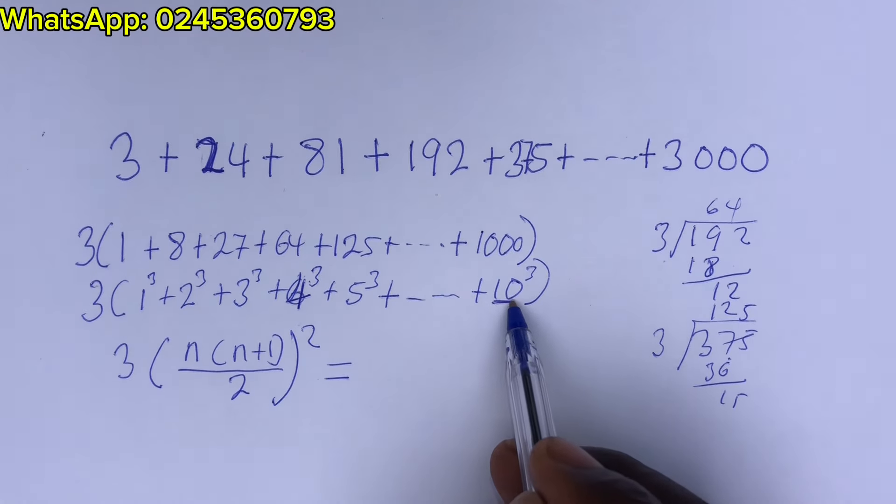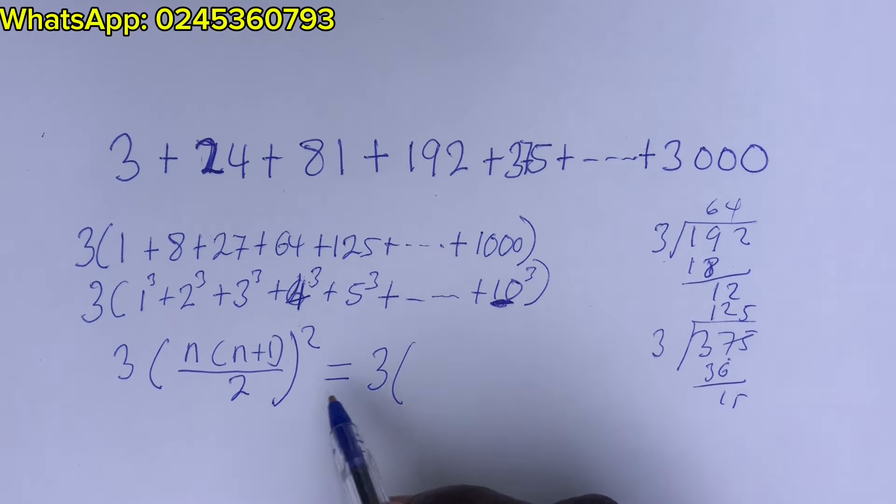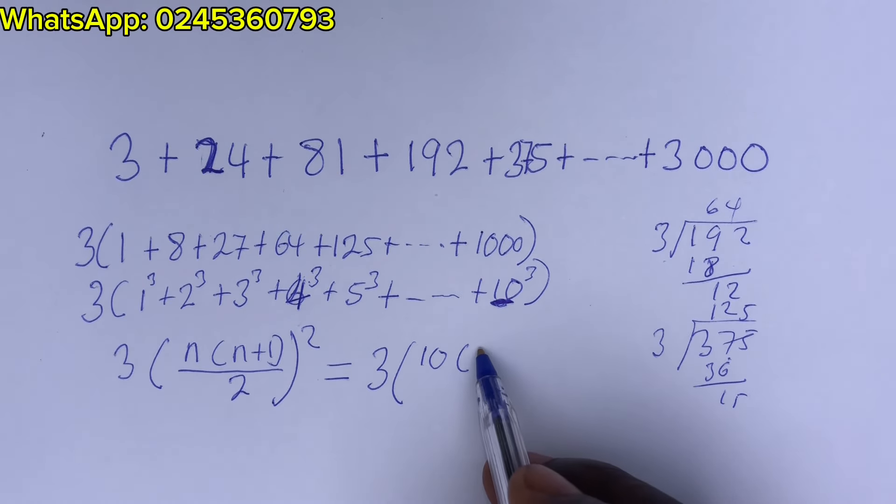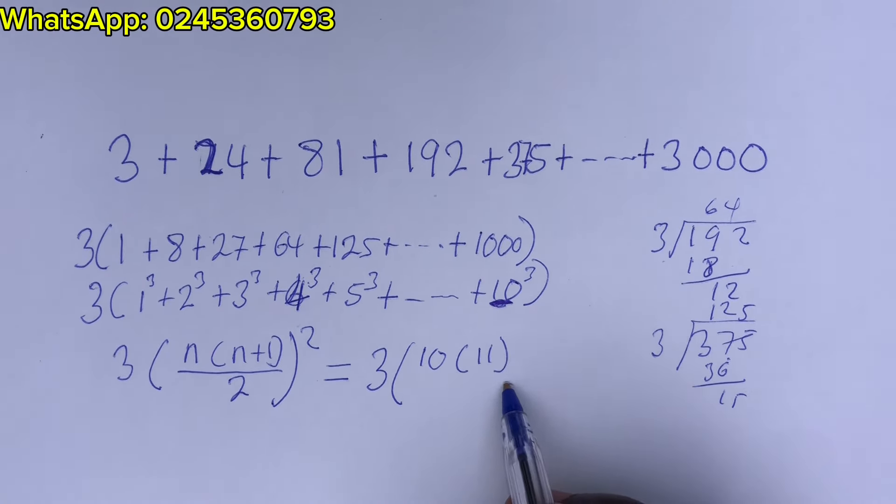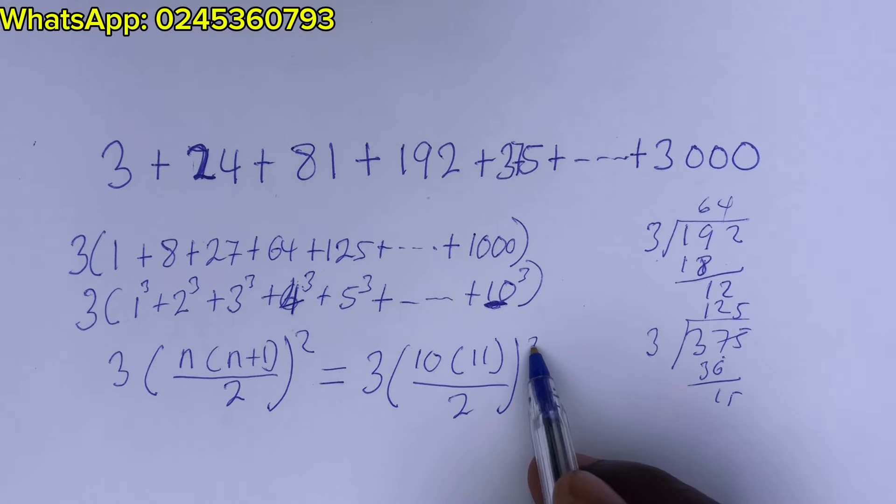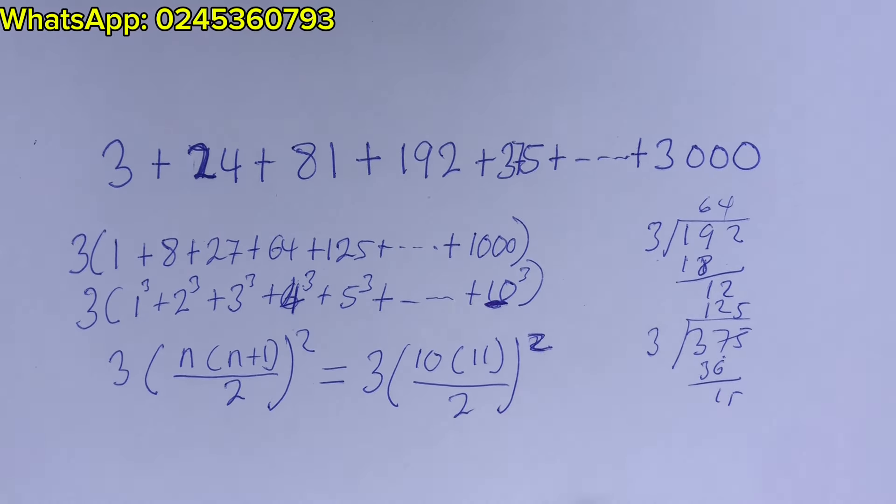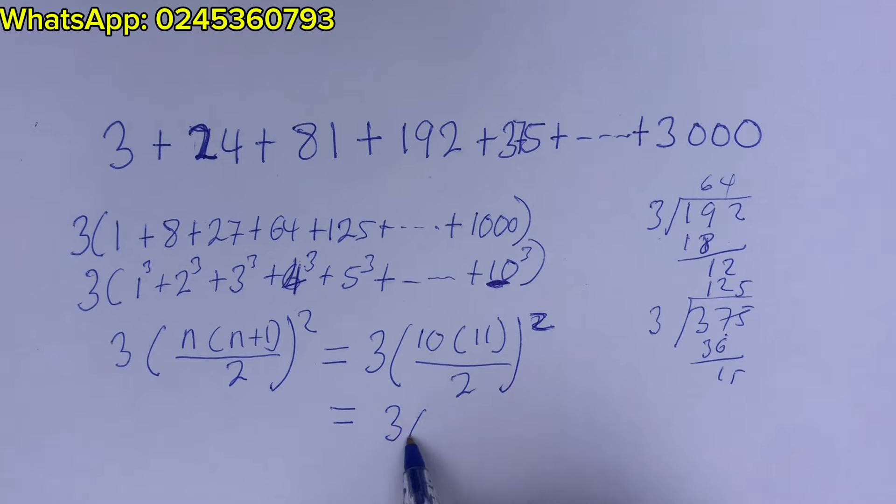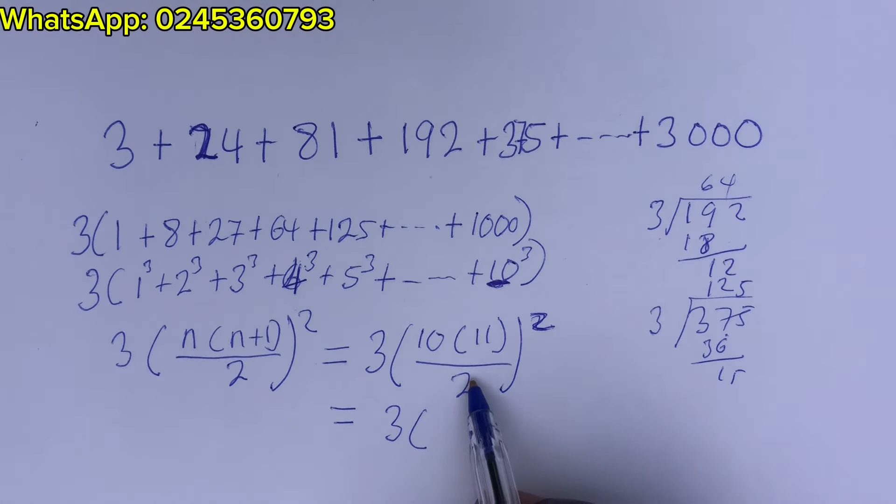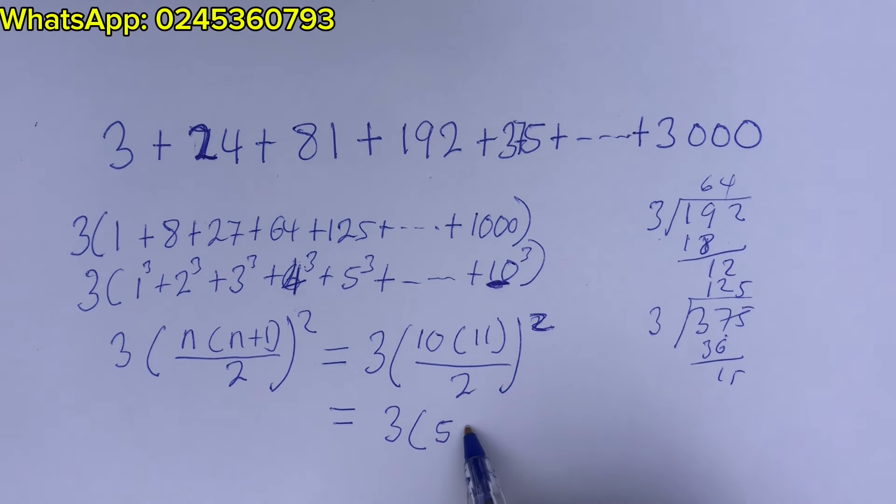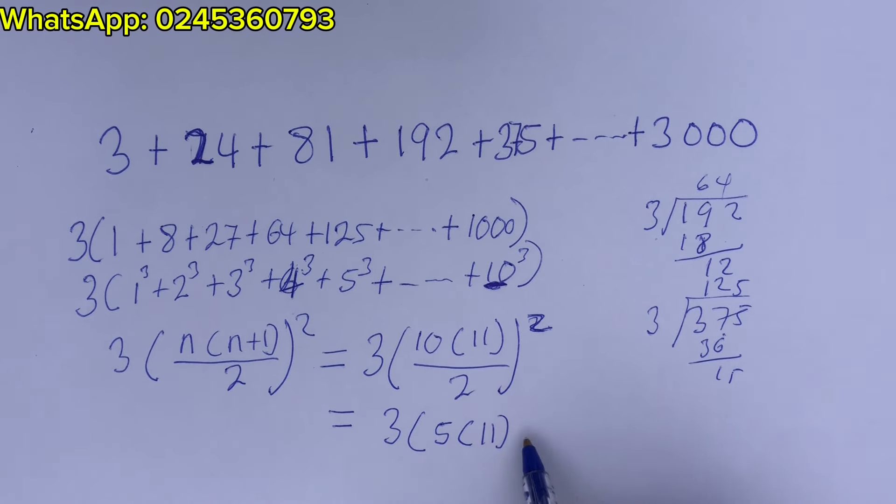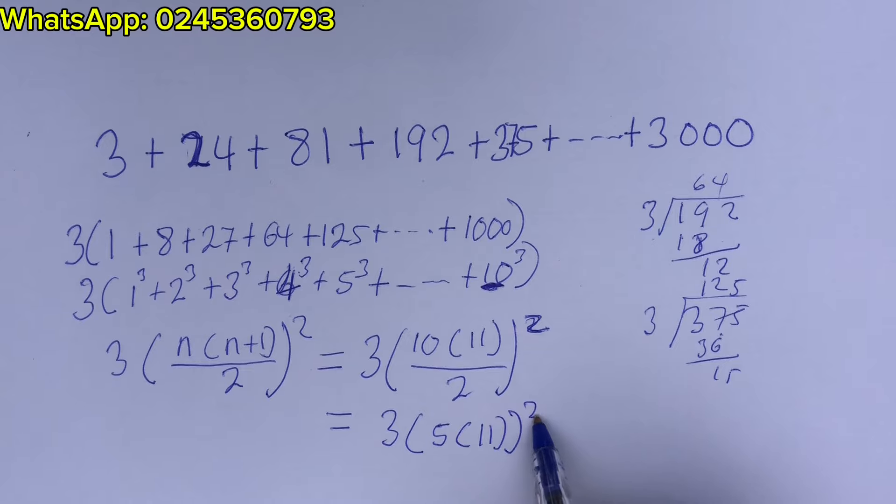So this is the n term. So that is 10. So this gives 3 into 10 into, that is 11. That is 10 plus 1 divided by 2 all squared. So this can be written as 3 into 2 go into 10 5. Right? Then we have 11 all squared.